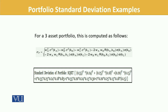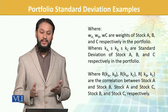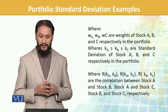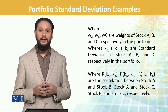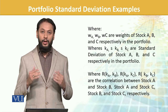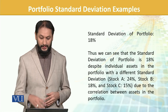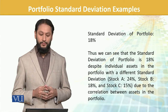We take the weights, we take the proportions along with their standard deviations, and then we take the correlation factor into account and come up with the standard deviation of the portfolio. The weights of all three stocks are taken, then the standard deviations of A, B, and C, and then the correlations between all elements.